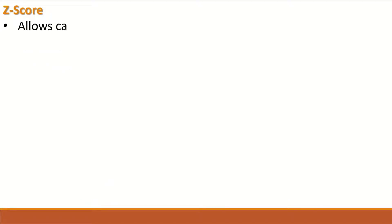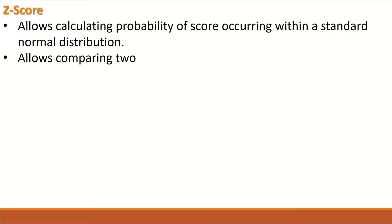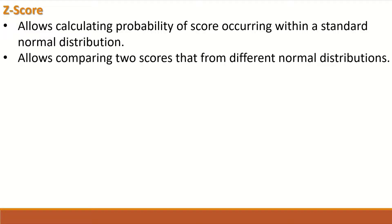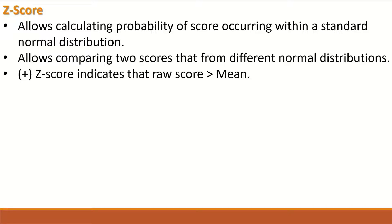So why do we do z-score conversion? Because it allows calculating the probability of scores occurring within a standard normal distribution, and it also permits comparison between scores in different variables or groups when those variables or groups are measured at different units or at different scales. The value for z-scores can be positive, negative, or 0.